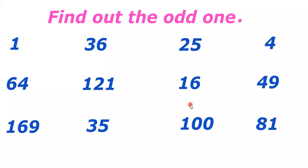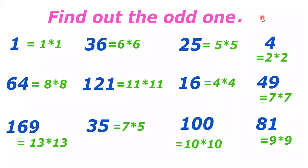Hi friends, now I am going to tell you about a few puzzles. Find out the odd one: 1, 36, 25, 4, 64, 121, 16, 169, 35, 100, 81, 49. Before I tell the solution, you try once.